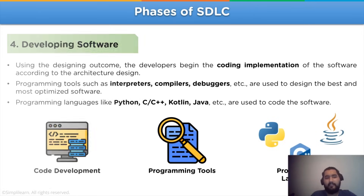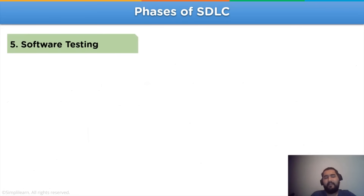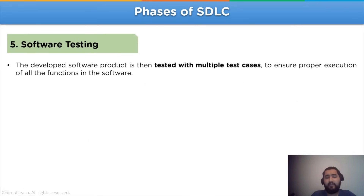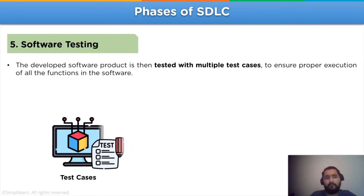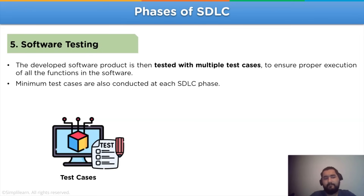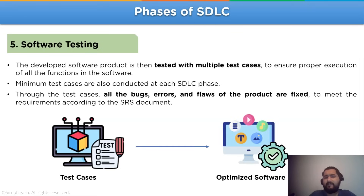Now let's move on to the next stage: software testing. In this stage, the developed software is tested with multiple test cases and different scenarios to ensure proper execution of all the functions included in the software. With respect to testing in SDLC, each phase has multiple case scenarios to assess it. Through all the test cases, the bugs, errors, or flaws of the software product are fixed to meet the requirements of the client as well as the SRS document.